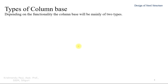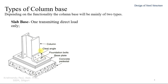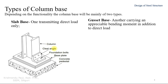There are two types of column base. The first is the slab base, which transmits direct load only. As shown in the figure, the load is only axial. If the column is not subjected to any appreciable amount of bending moment, we should use a slab base — it is the simpler case of column base design.